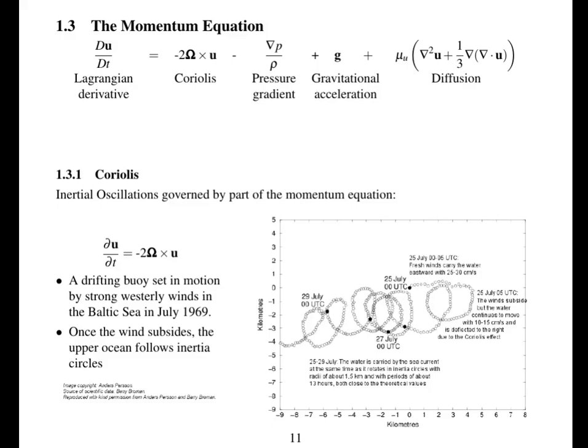We'll start by looking at Coriolis. So if Coriolis is the only term that's large in the momentum equation, then we have the rate of change of velocity is equal to the Coriolis term. So whatever direction the velocity is going in, it's going to get rotated by the Coriolis term. And this shows locations of drifter buoys set in motion by winds in the Baltic Sea. And then once the wind subsides, these buoys follow inertial oscillations. So the only significant force acting on them is the Coriolis force. And the Coriolis force always acts at 90 degrees to the motion. So it will always make it turn in circles and create these inertial oscillations.